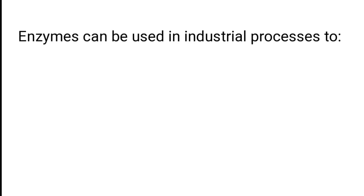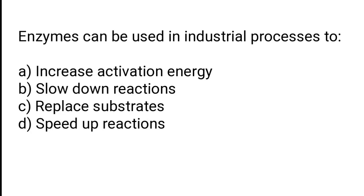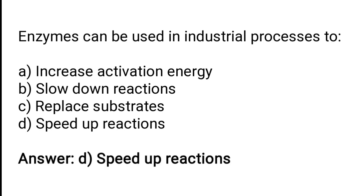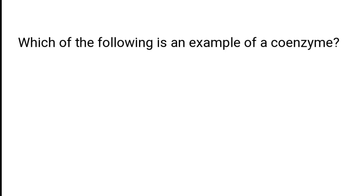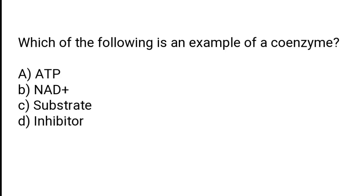Enzymes can be used in industrial processes too. In industry, enzymes are used to — A) increase activation energy, B) slow down reactions, C) replace substrates, D) speed up reactions. The correct answer is option D. Which of the following is an example of a coenzyme? A) ATP, B) NAD+, C) substrate, D) inhibitor. The correct answer is option B. NAD+ is an example of a coenzyme.